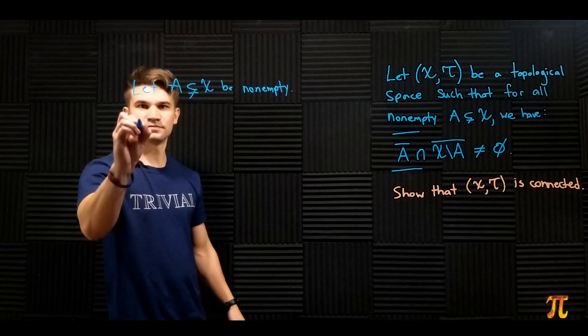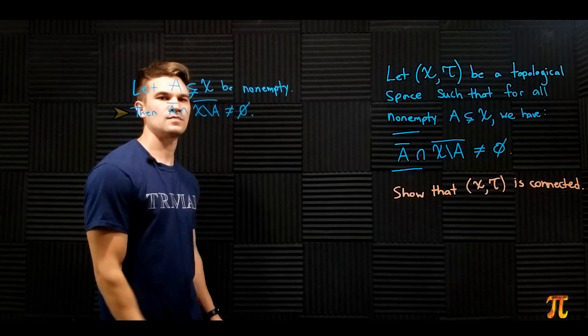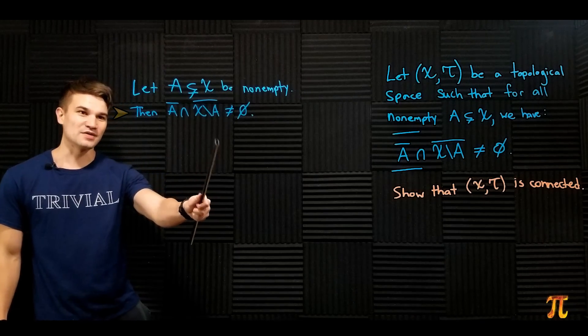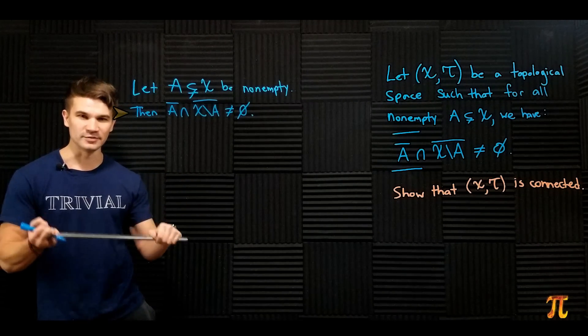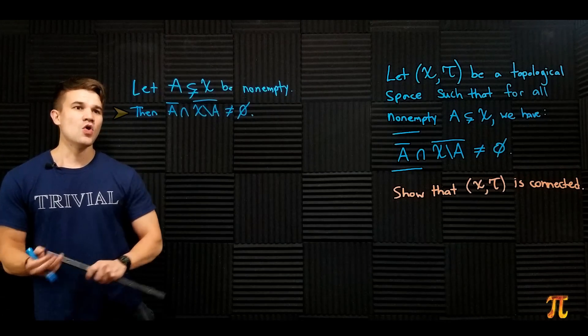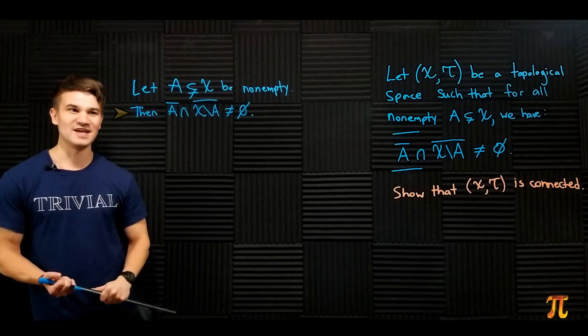But it's certainly true that A intersected with its complement is empty. Because of that, we can conclude that either A's closure is not equal to A, or A's complement's closure is not equal to A's complement.